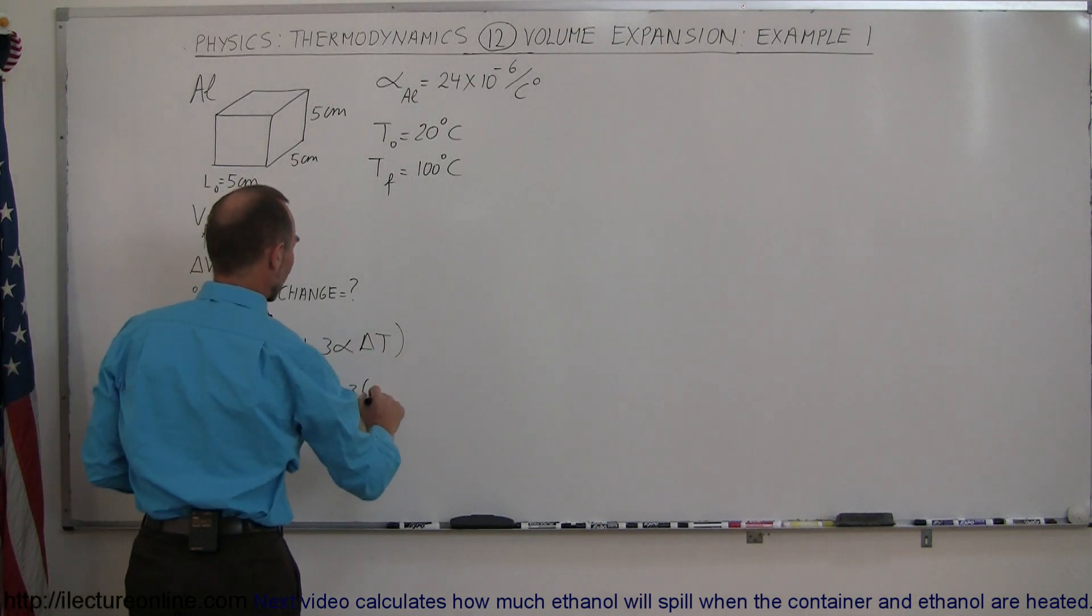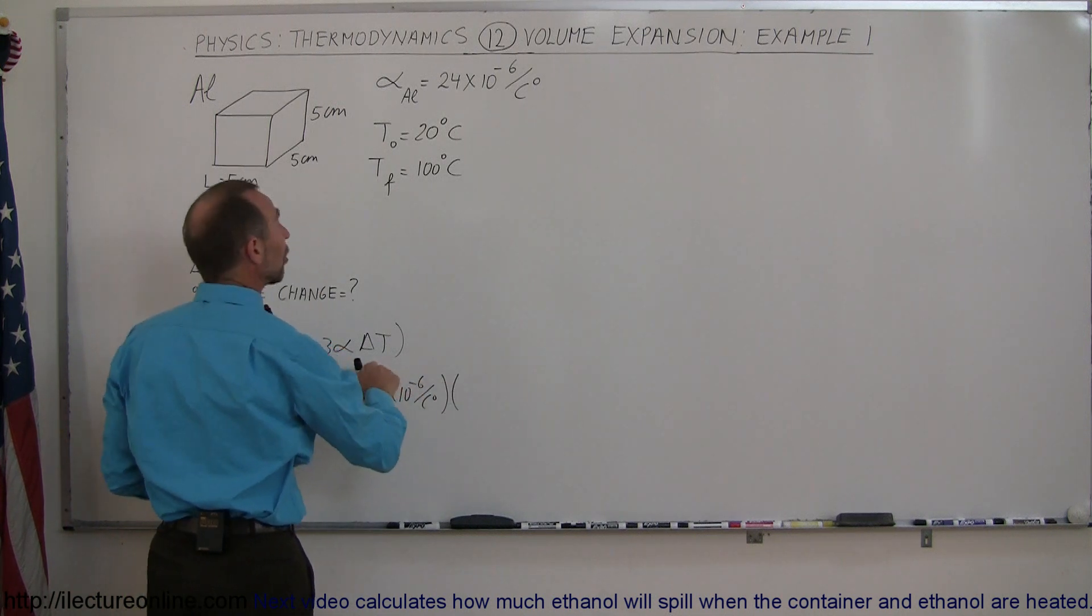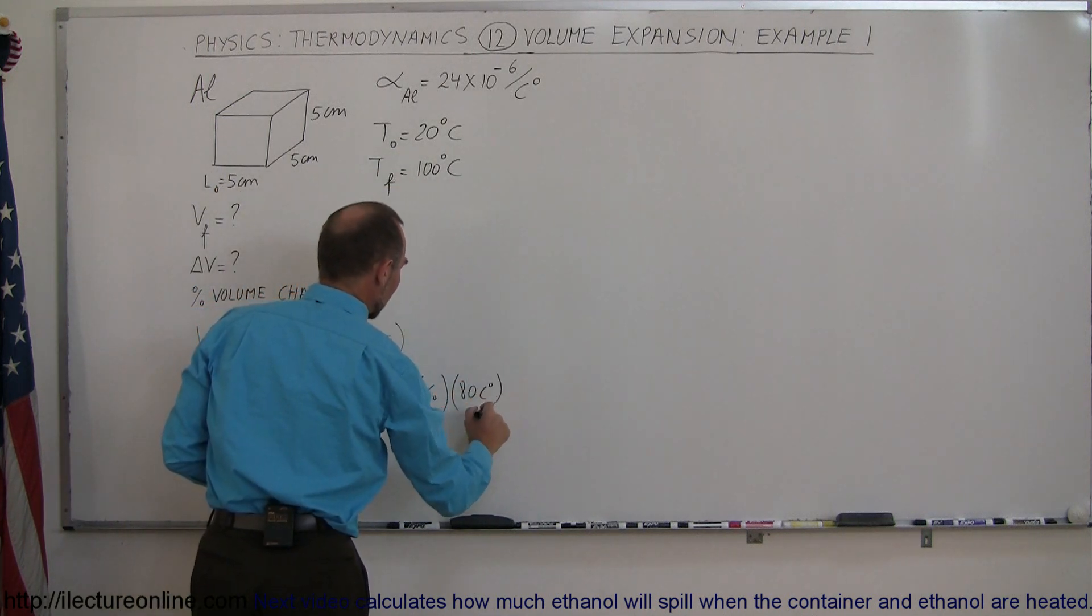Alpha is 24 times 10 to the minus 6 per centigrade degree, times the change in temperature from 20 to 100. That's 80 centigrade degrees.